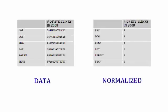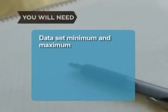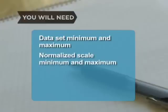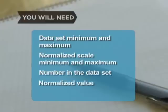The steps for normalizing a data set are described here. You will need a data set minimum and maximum, a normalized scale minimum and maximum, a number in the data set, and a normalized value.